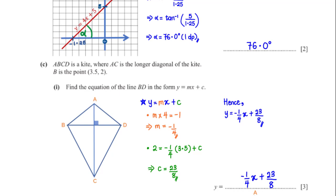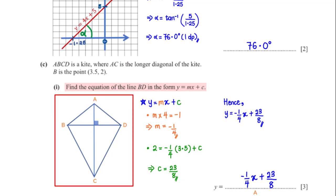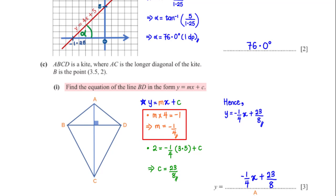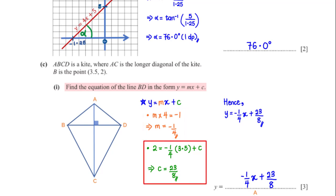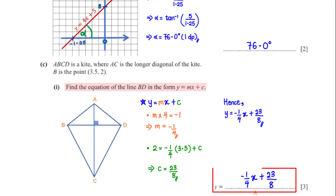ABCD is a kite where AC is the longer diagonal. B is the point (3.5, 2). Find the equation of line BD in the form y = mx + c. BD and AC are perpendicular, so the product of their gradients equals negative 1. With the gradient of AC being 4, the gradient of BD is negative 1/4. Plugging m = negative 1/4 and B = (3.5, 2) into the equation gives c = 23/8. So y = negative 1/4 x + 23/8.